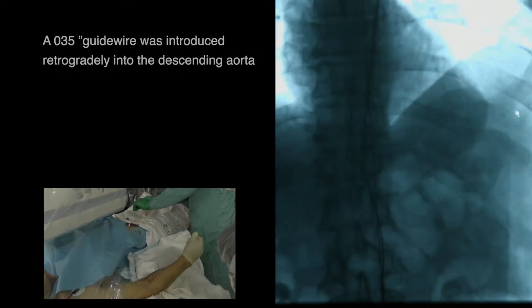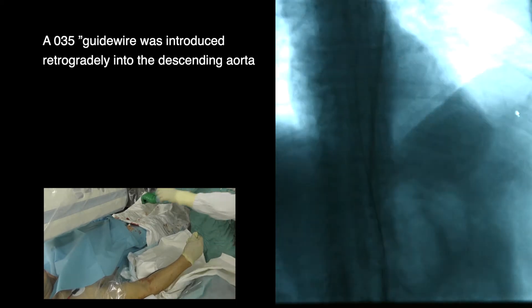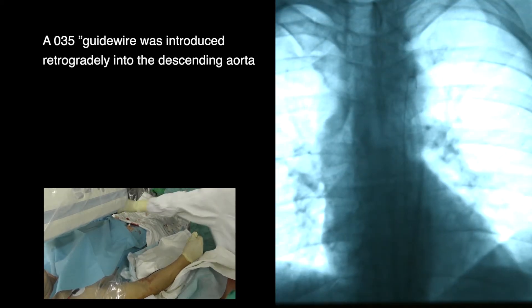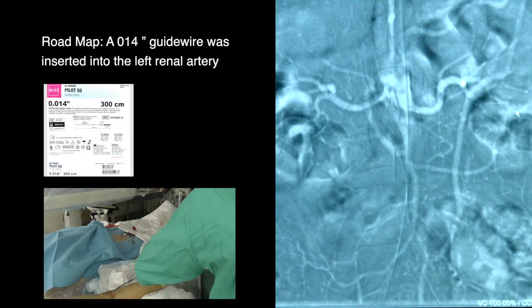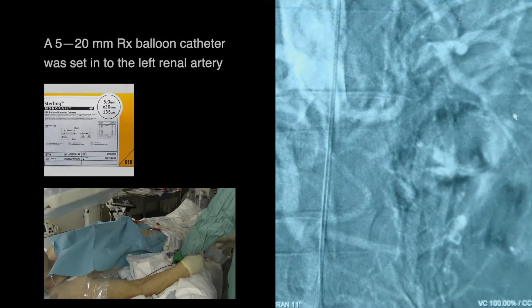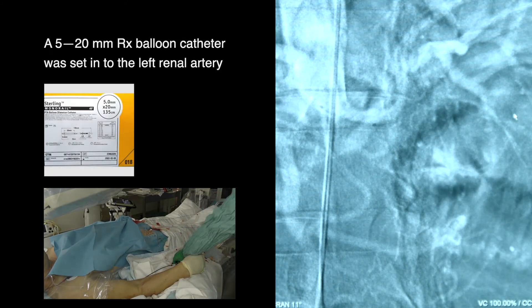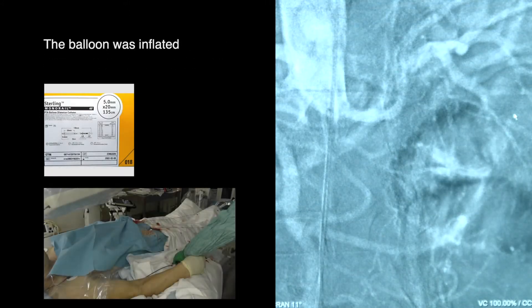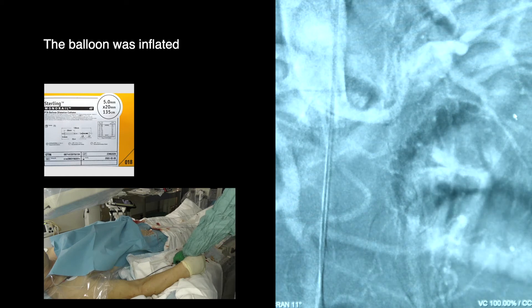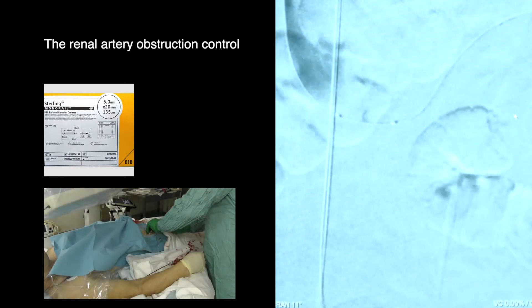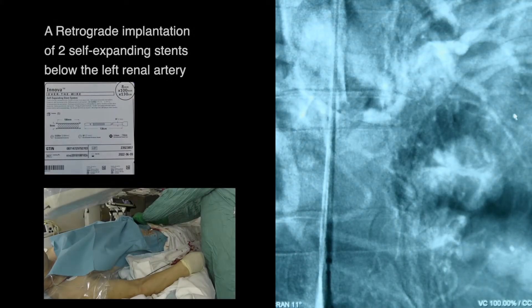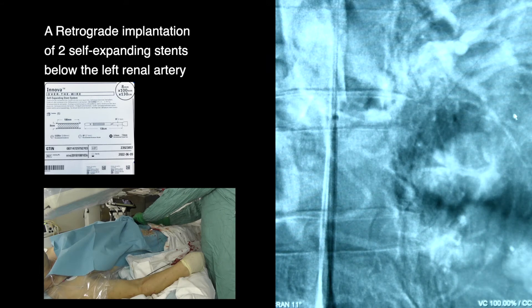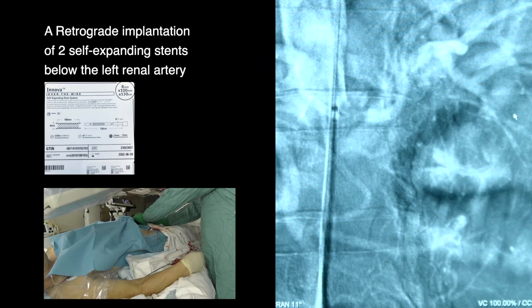A 0.35-inch guide wire was inserted into the left renal artery and a 5×20 mm Airx balloon catheter was set into the left renal artery for renal artery obstruction control. Retrograde implantation of two self-expanding stents was performed below the left renal artery.